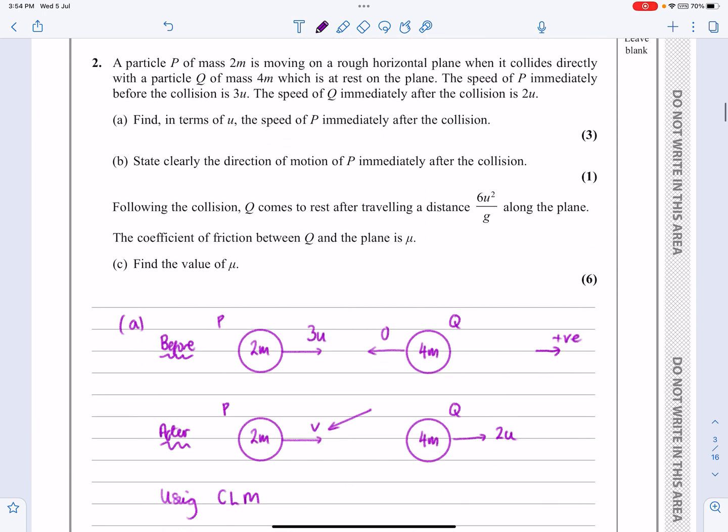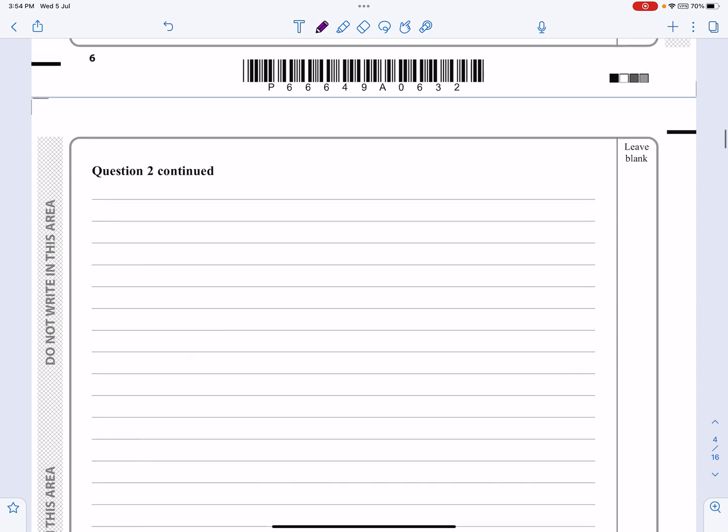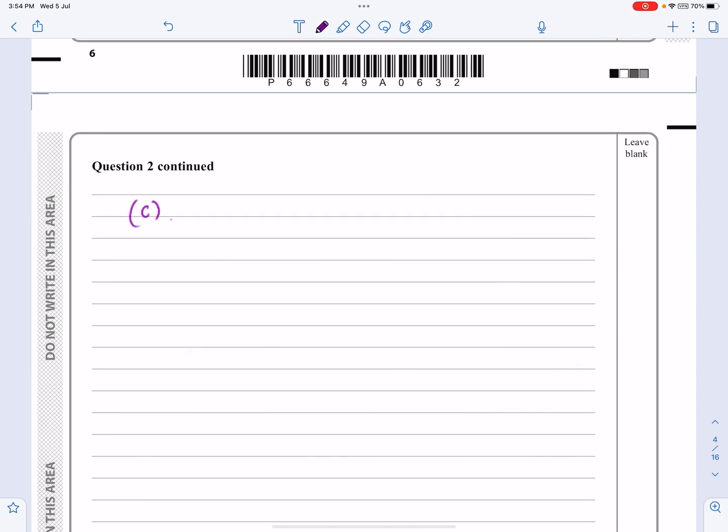Let's change direction. Part C, this is a great question here. Following the collision, Q comes to rest after travelling a distance 6u squared over g along the plane, and it tells us the coefficient of friction between the plane and Q is mu - find mu. Well, let's not worry about finding mu first. Let's just see what I've got for this part C here.